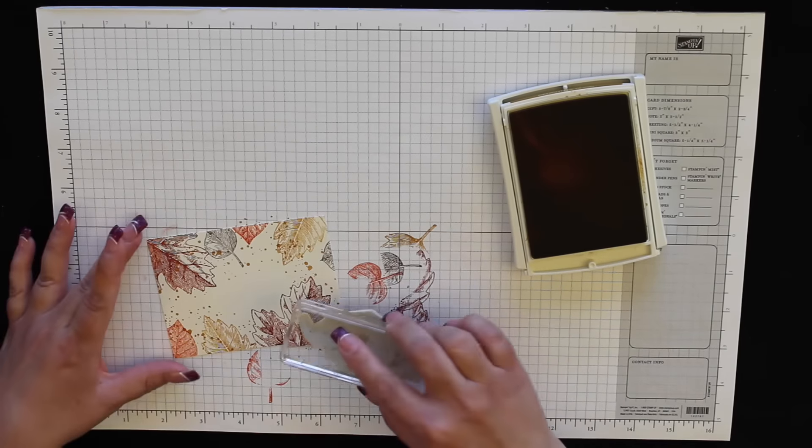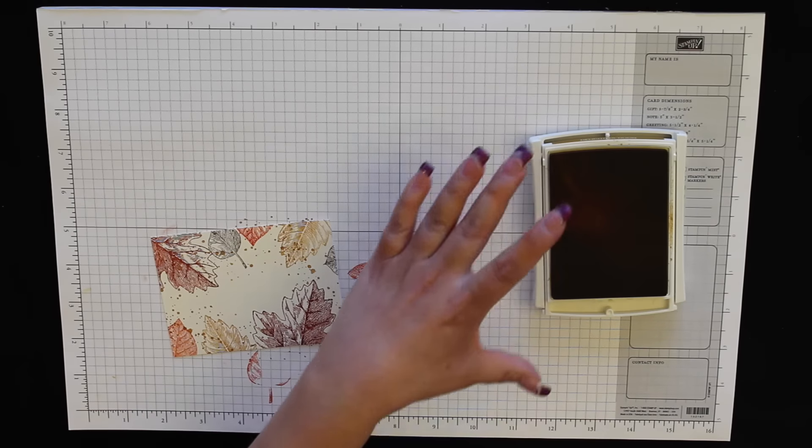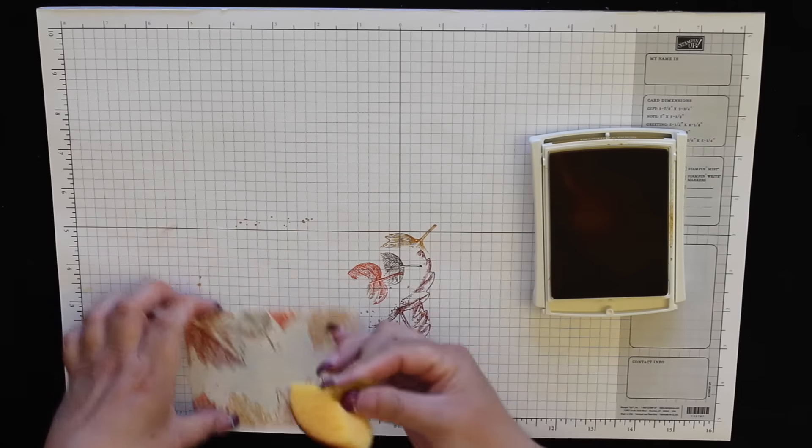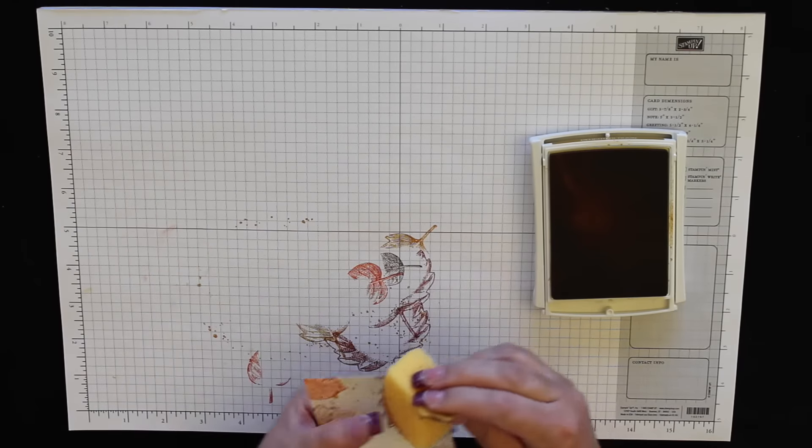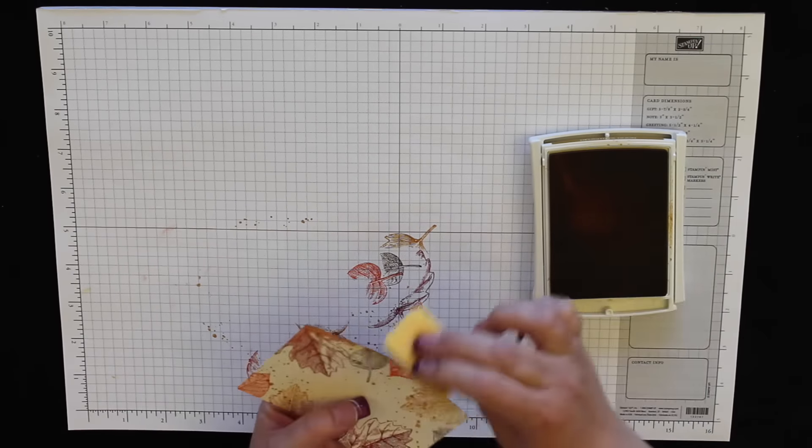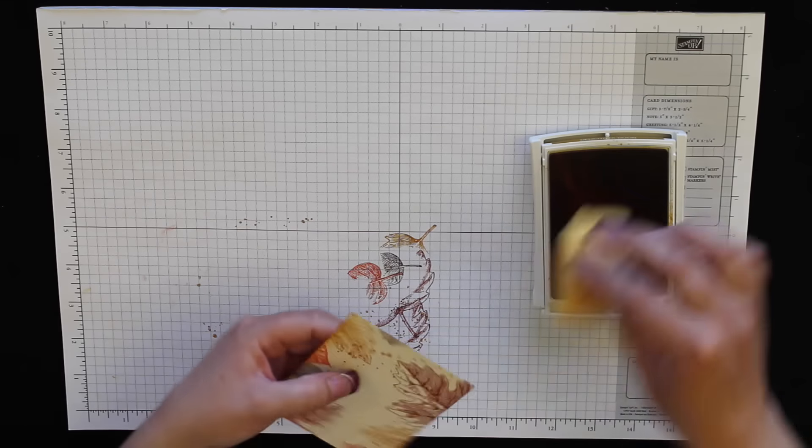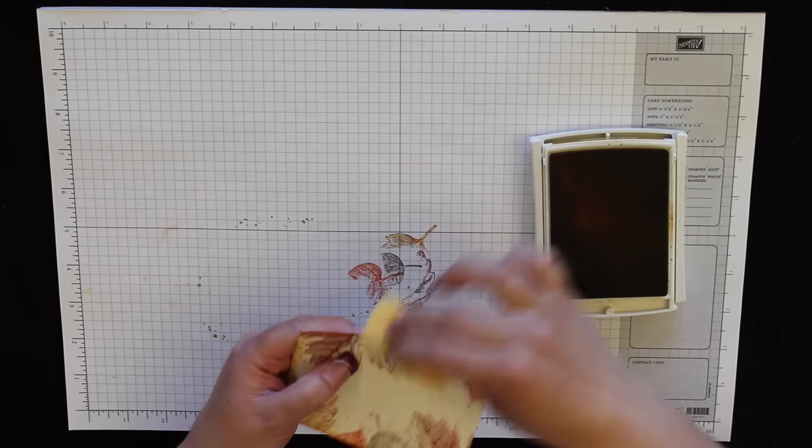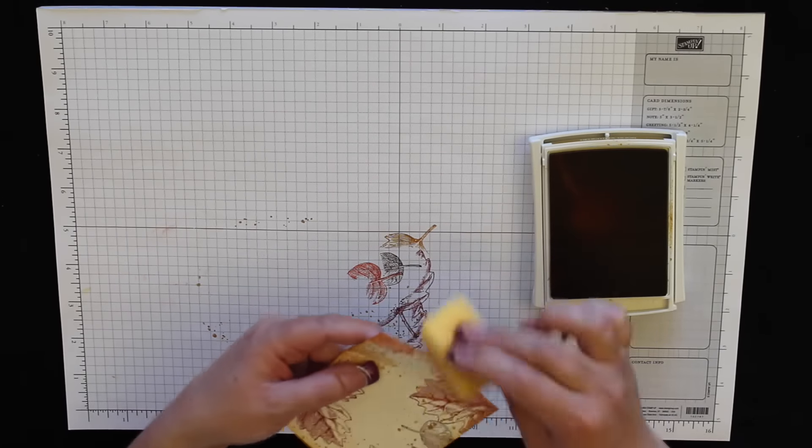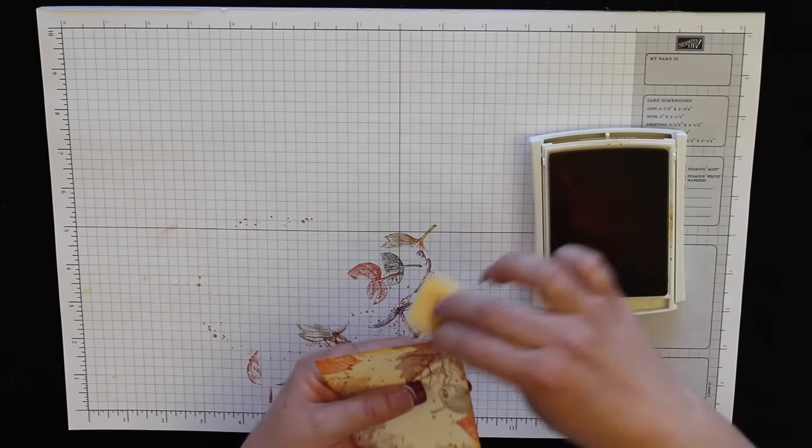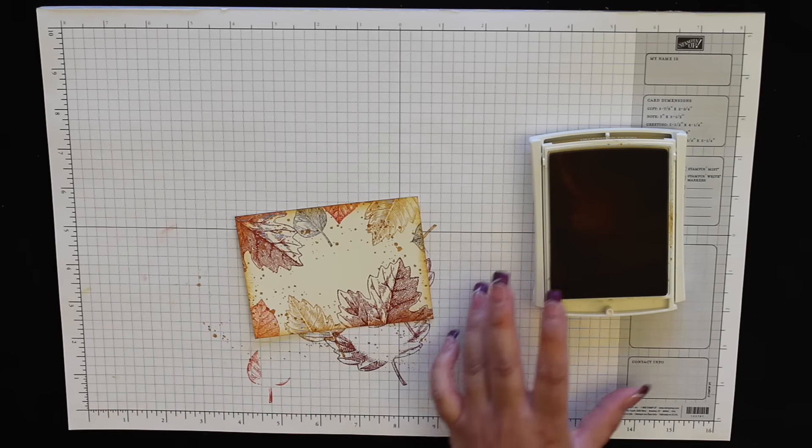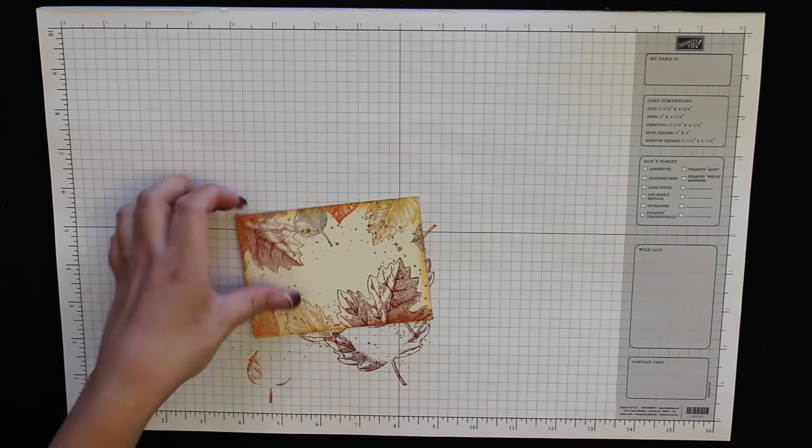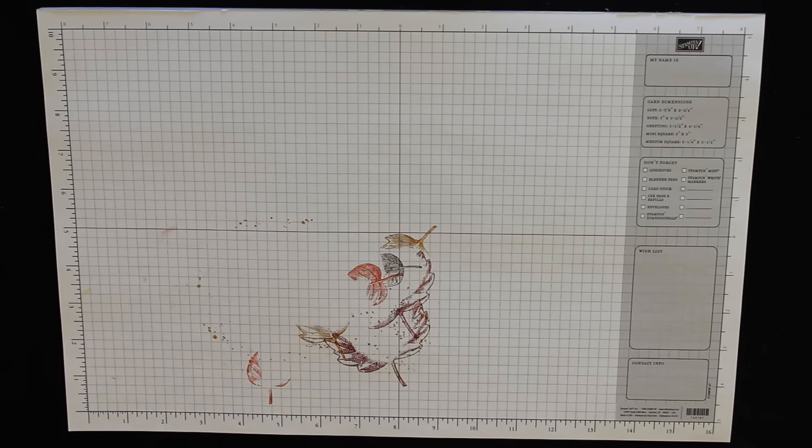Remember, we've got a big sentiment in the middle, so you don't have to worry too much about covering that up. I actually think that's pretty good. Okay, next we're going to need a sponge with our Delightful Dijon ink and we're going to sponge all around the edges here.